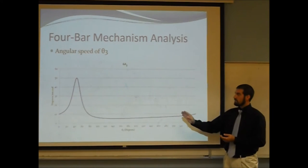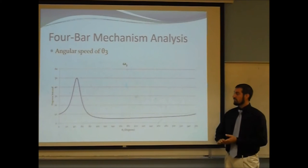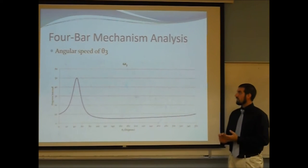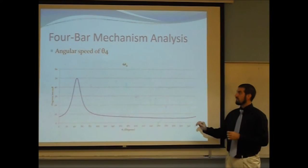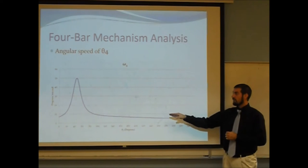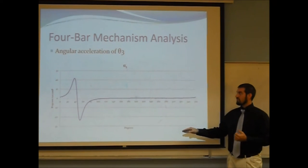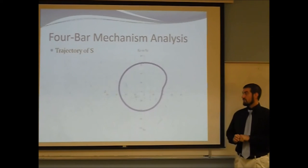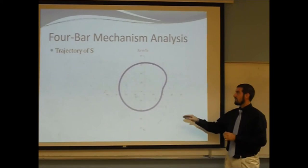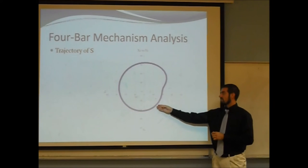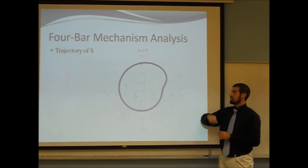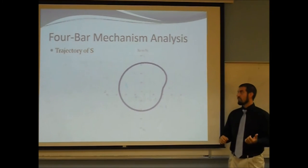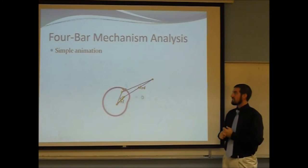You'll notice in the graph of the acceleration with regards to theta 2, the driver, there was a spike in the velocity around 45 degrees, as well as the same spike in the velocity for theta 4, and in the acceleration for theta 3 and theta 4. There's also a sharp incline in the trajectory of s around the same point when theta 2 equals 45 degrees, which I can show you in the next slide in this animation.